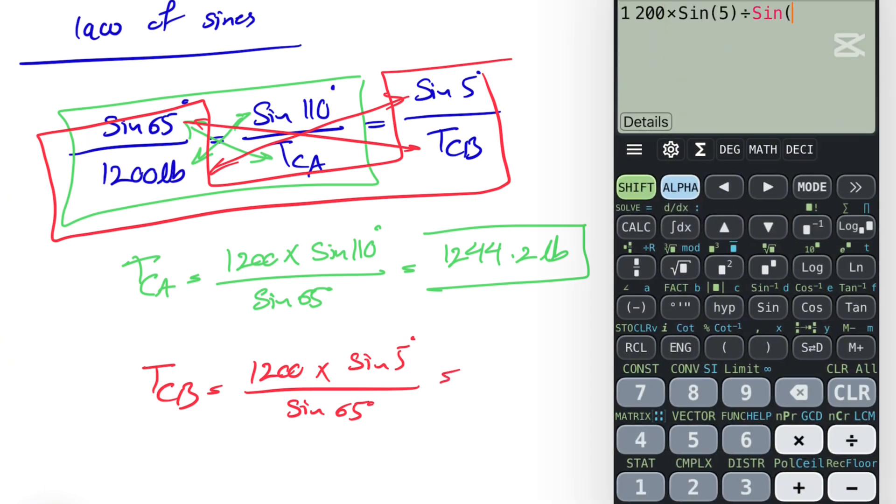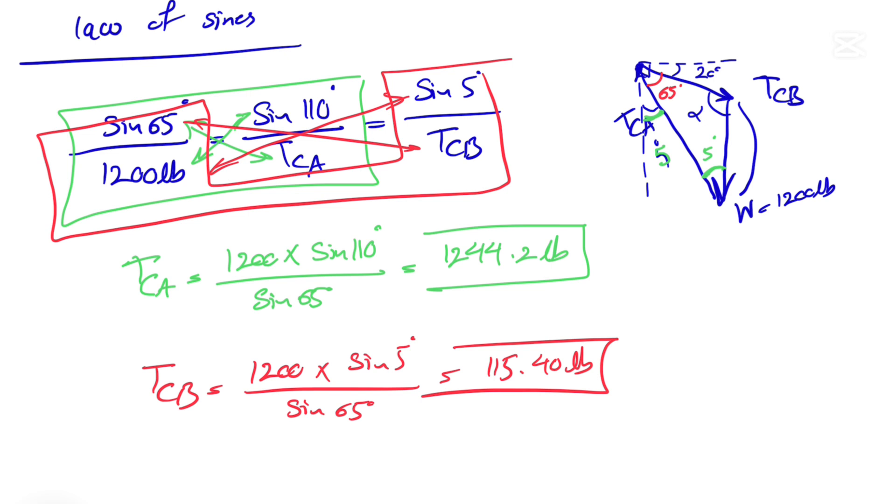Let's see what we're getting here. 1200 times sine of 5, that's going to give us 115.40 pounds, which would be the answer for the tension in cable BC.